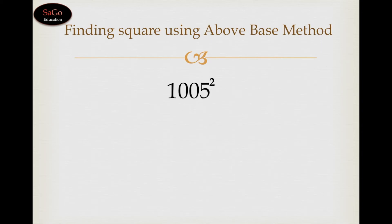Let's take one more sum, 1005 square. Write 1005 as it is. 1005 is 5 above the nearest base 1000. Add 5 in it, put a slash and take the square of 5.